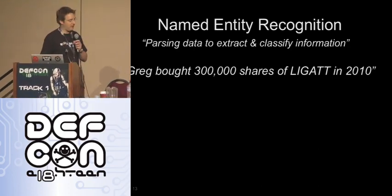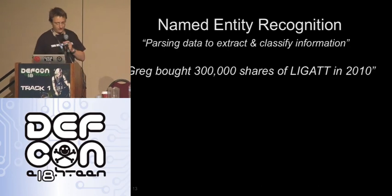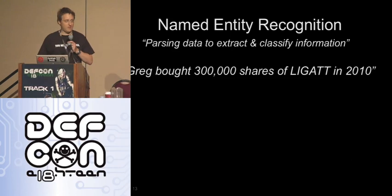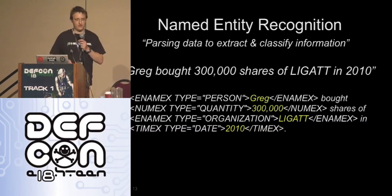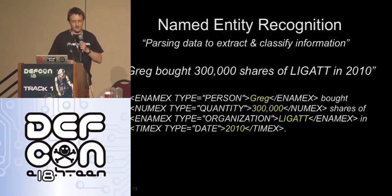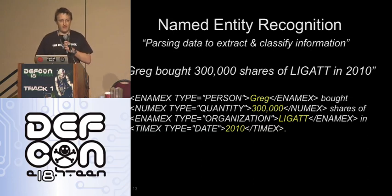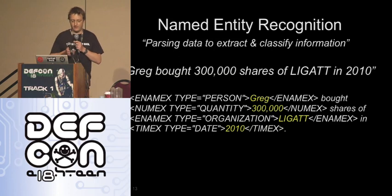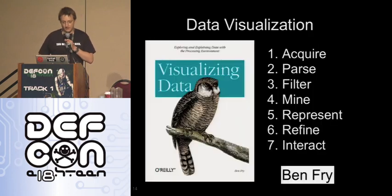So completely at random I chose this phrase: 'Greg bought 300,000 shares of Legat in 2010.' If you don't know about Legat, please Google it — it's very interesting. Legat and attrition, and you should be on to something. If you run that phrase through named entity recognition, you'd come out with something like this. I'm mentioning NER because it's a feature in Maltego, which is a tool I'll talk about shortly. There are other products like Open Calais — really cool, go check it out.